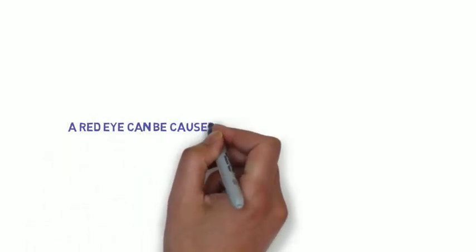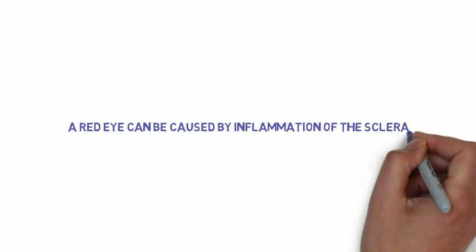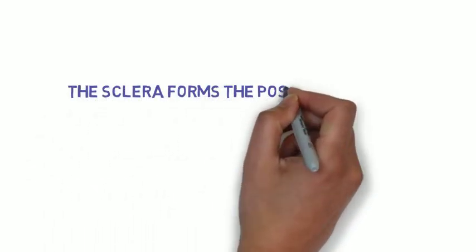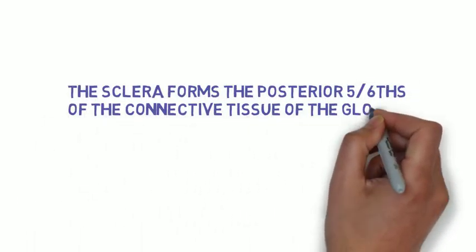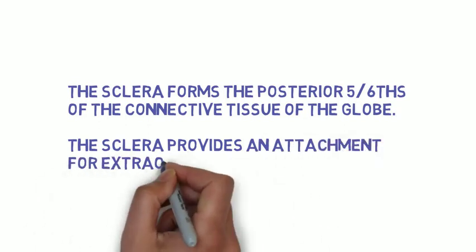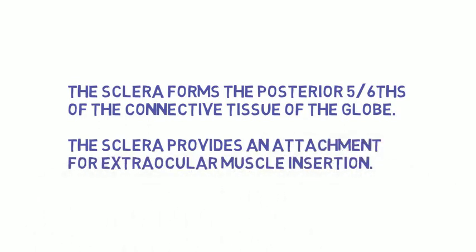A red eye is caused by inflammation of the sclera. The sclera forms the posterior five-sixths of the connective tissue of the globe and also provides an attachment for the extraocular muscles to insert.